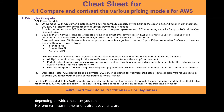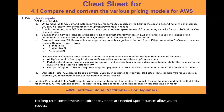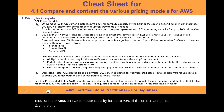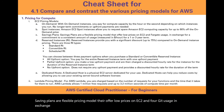Spot instances allow you to request spare Amazon EC2 compute capacity for up to 90% off the on-demand price. Savings plans are a flexible pricing model offering low prices on EC2 and Fargate usage in exchange for a commitment to a consistent amount of usage for a one or three year term.